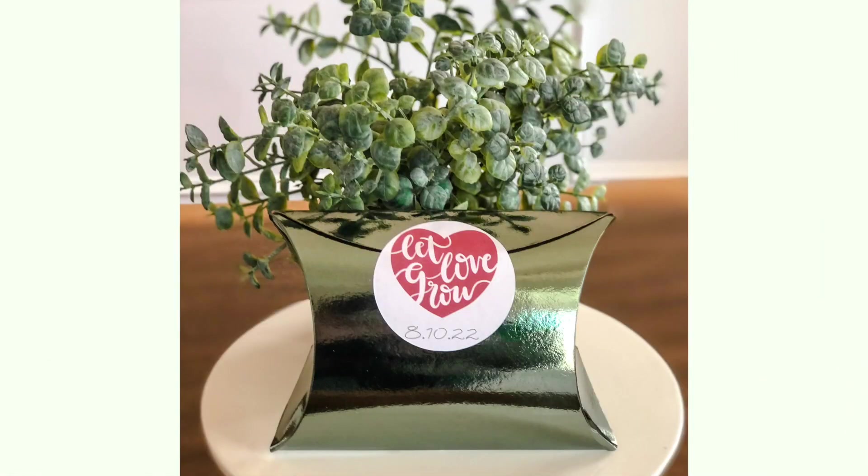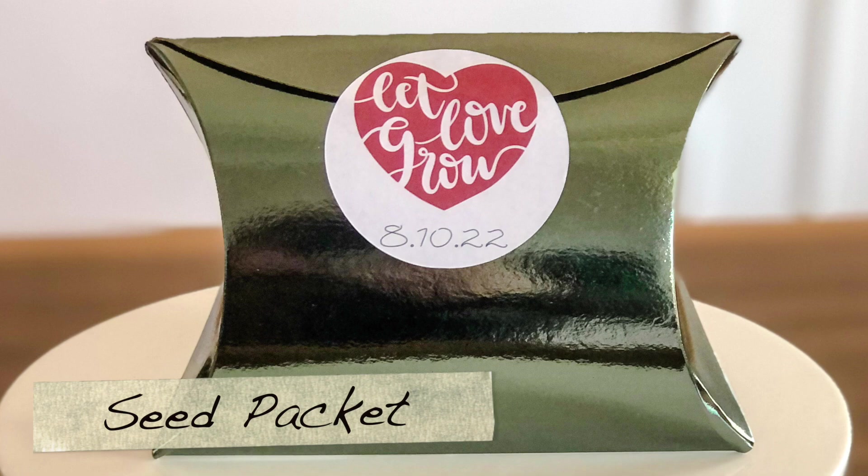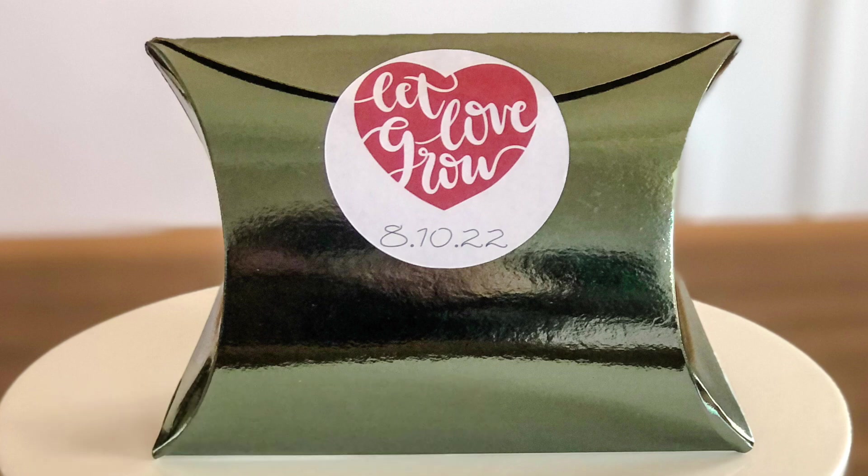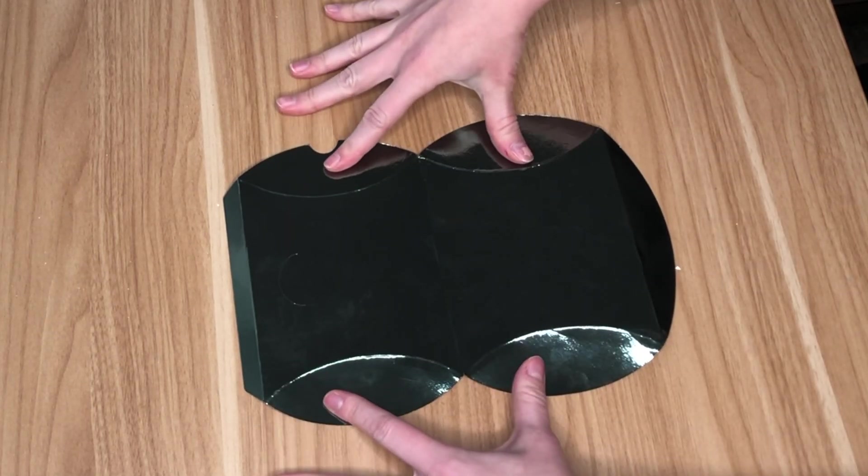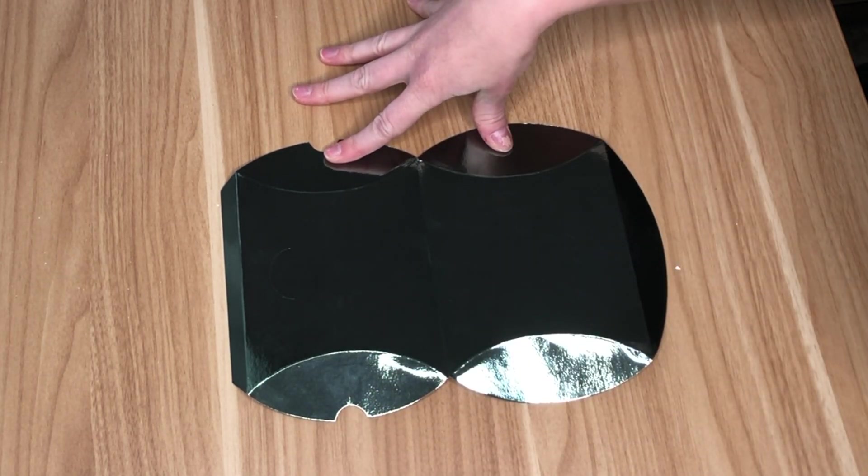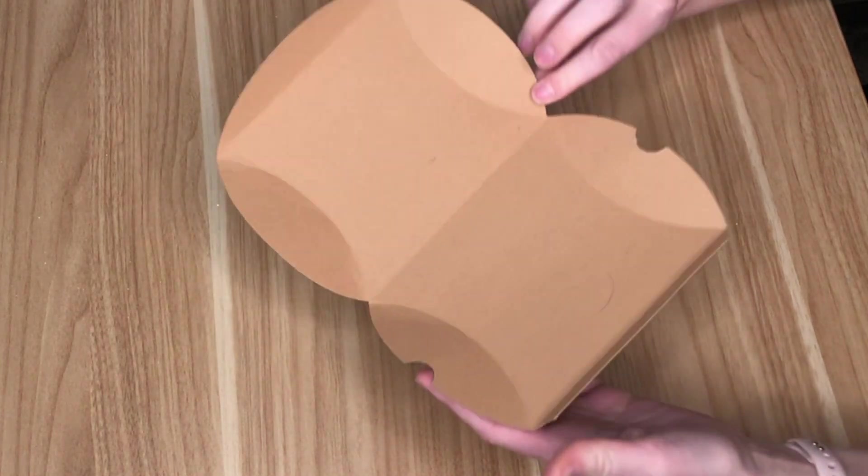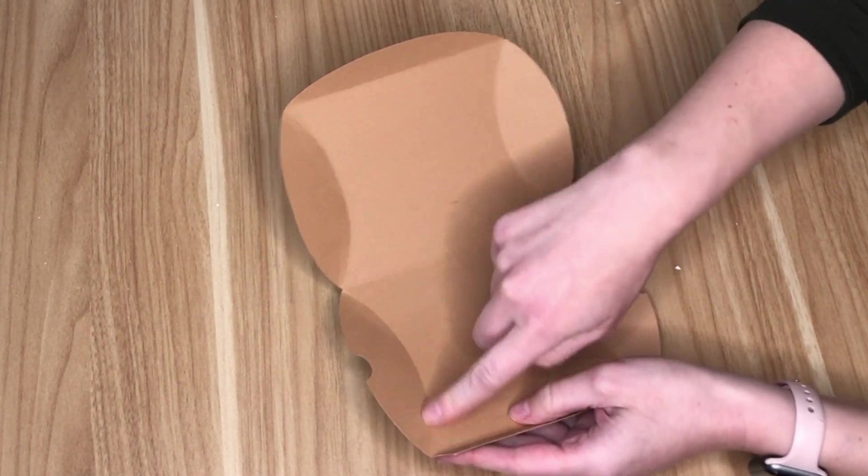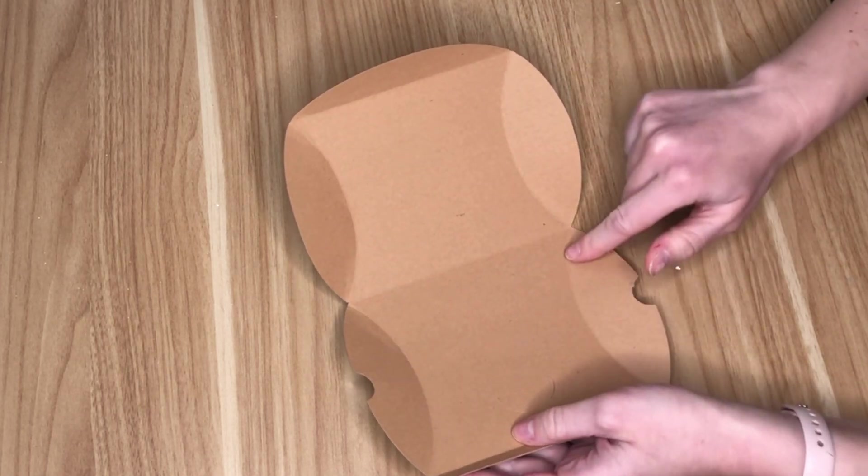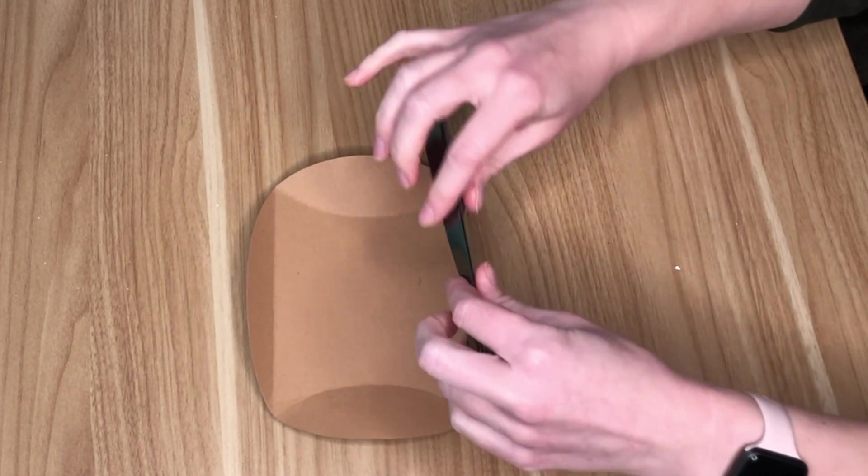This next wedding favor DIY would be cute, not only for a bridal shower, but also something that guests can leave your wedding with. It's an adorable box that says let love grow and is filled with seed packets. But I will also have the template for this box linked down below so you can make your own. So you could really make whatever sticker you want and place whatever you want to inside of this box. So again, I will place the template in the description box linked down below.